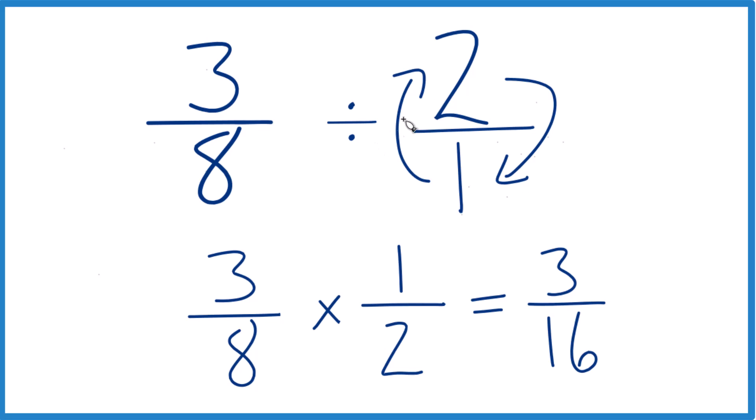So the answer to our question: three-eighths divided by two, or you could say three-eighths times one-half, that gives you three-sixteenths. This is Dr. B, and thanks for watching.